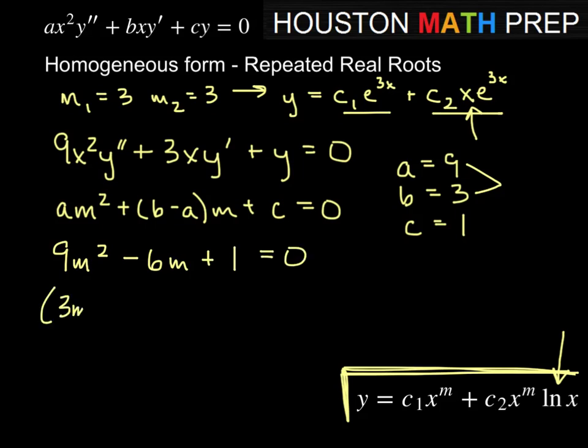When we factor this, we might get 3m minus 1, 3m minus 1, equal to zero. So here in both of these, we get that m equals 1 third, so we get repeated real roots.